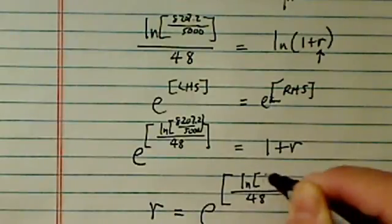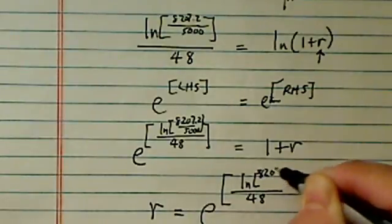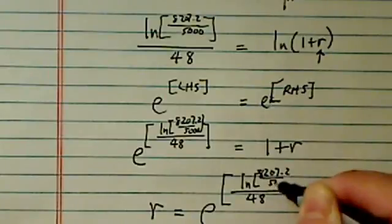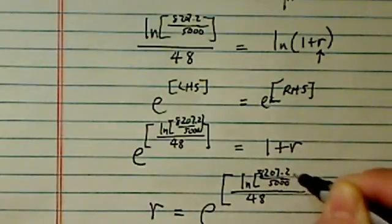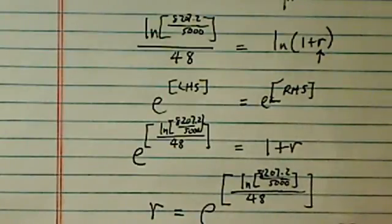natural log of 8207.2 divided by 5000. This whole thing, minus 1.